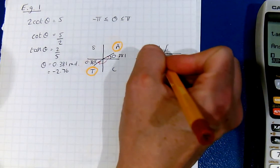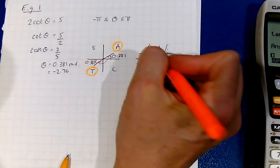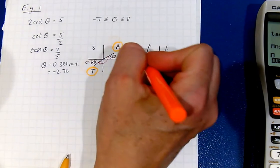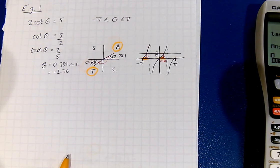Now we know that this is 0.381. So we know that this width, by symmetry, is the same as that width. So we can do negative pi plus 0.381.